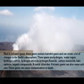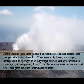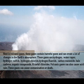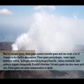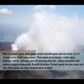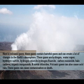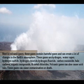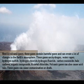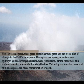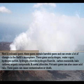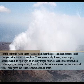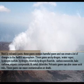Next is volcanic gases. These gases contain harmful substances and create a lot of changes in the Earth's atmosphere. These gases are hydrogen, water vapor, hydrogen sulfide, hydrogen chloride, hydrogen fluoride, carbon monoxide, halocarbons, organic compounds, and mineral chlorides. Volcanic gases can also cause acid rain and contamination or death.